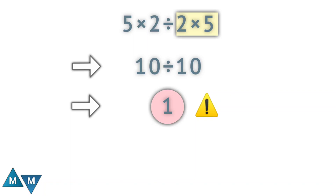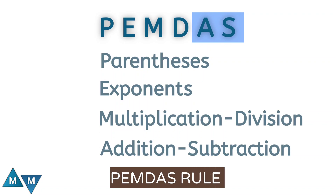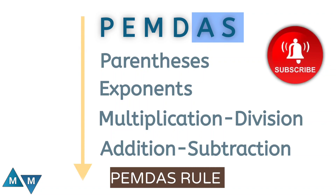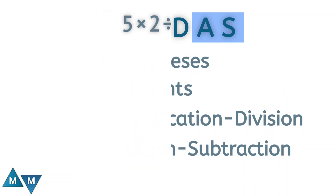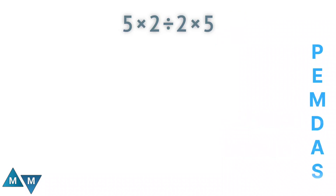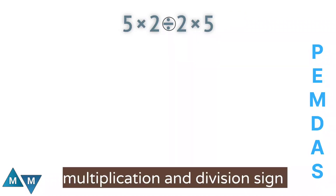Let's find the correct answer. Here we can use PEMDAS rule to solve this expression, as it helps to determine the sequence in which a mathematical expression should be evaluated to ensure accurate results. In this expression, we have two signs: multiplication signs and division signs. According to PEMDAS rule, both signs have the same priority, so the expression will be solved from left to right.